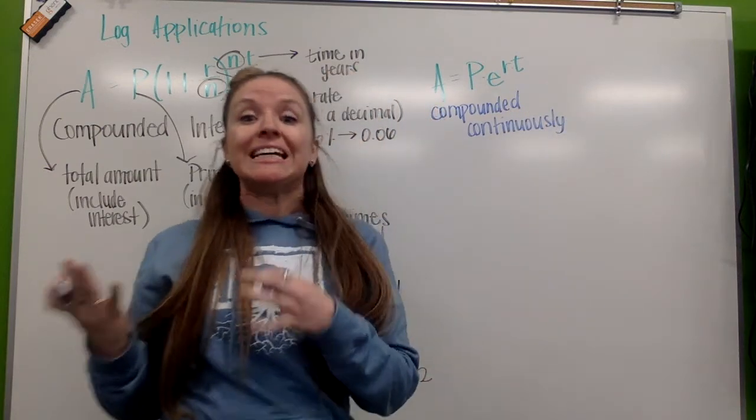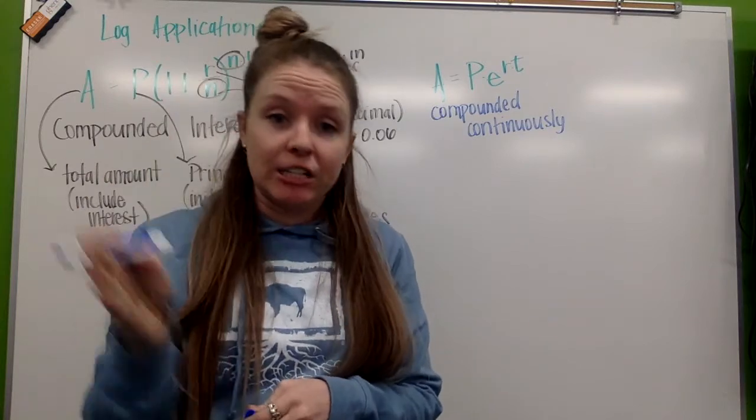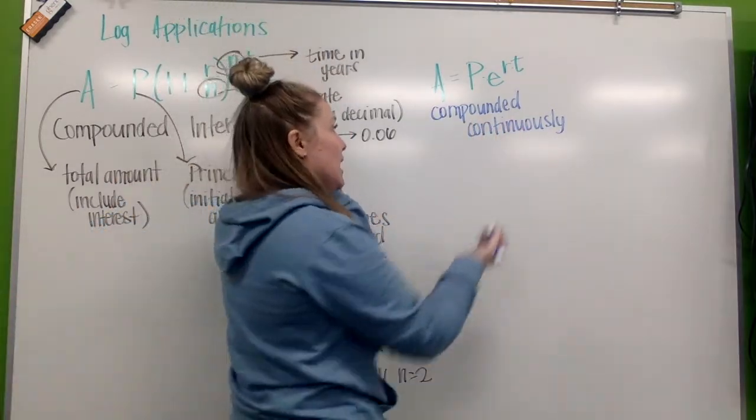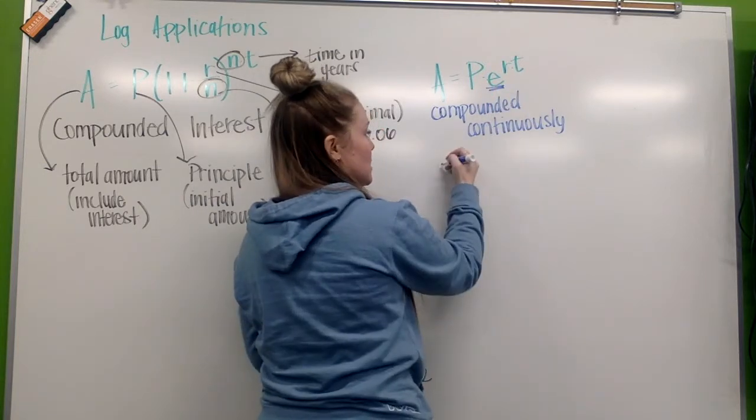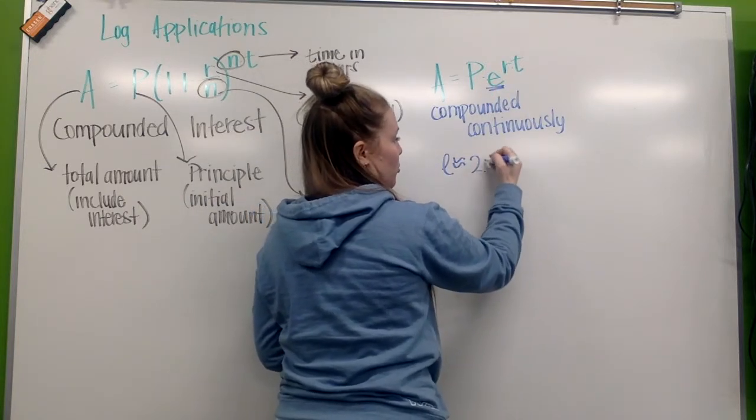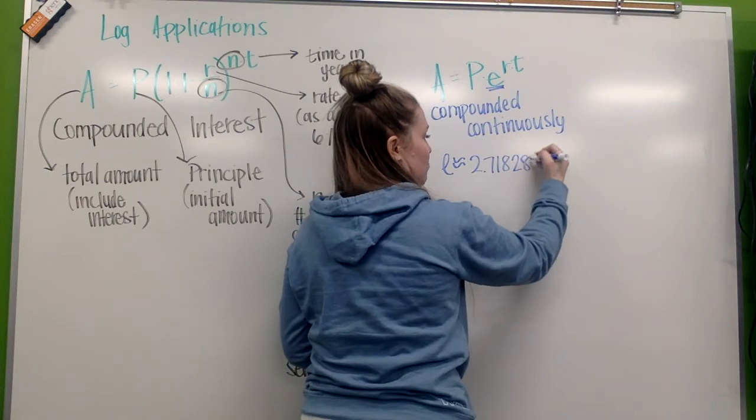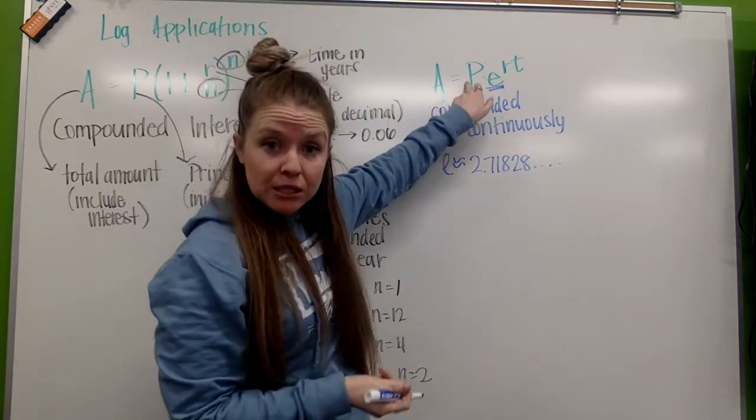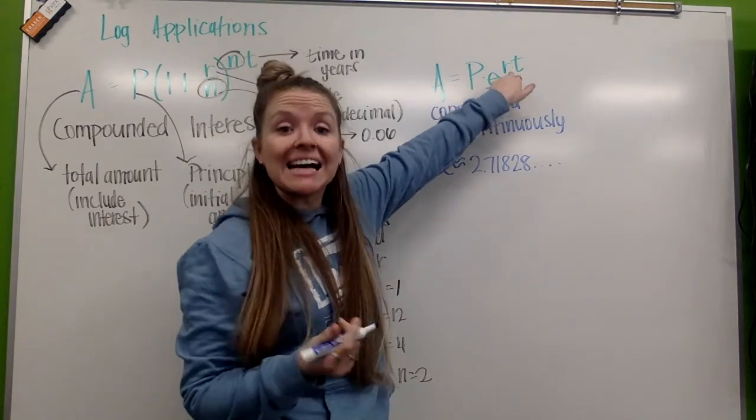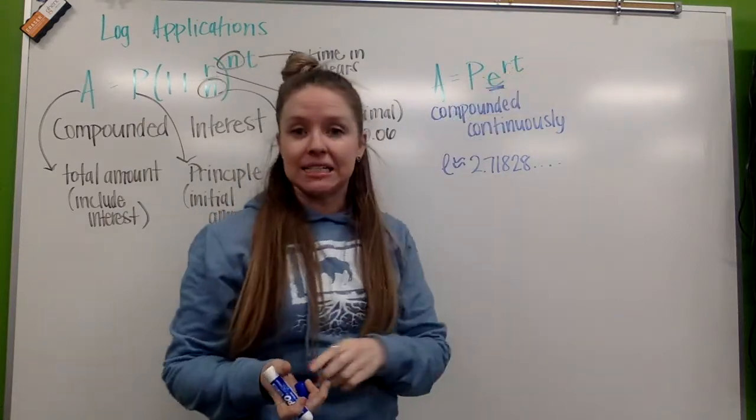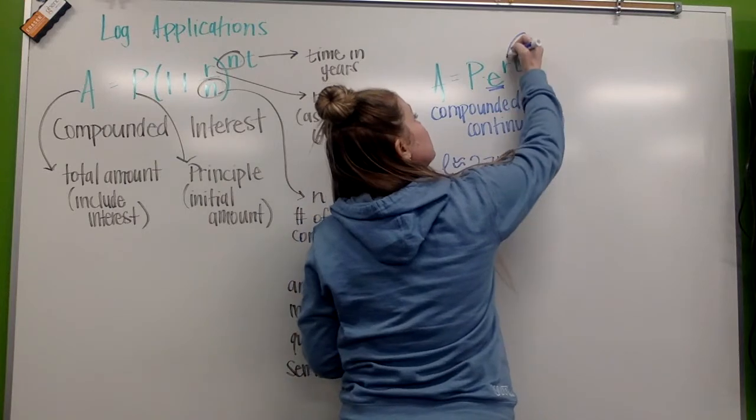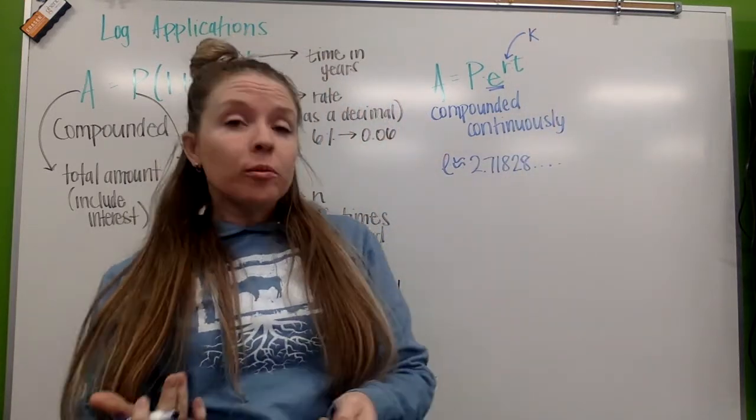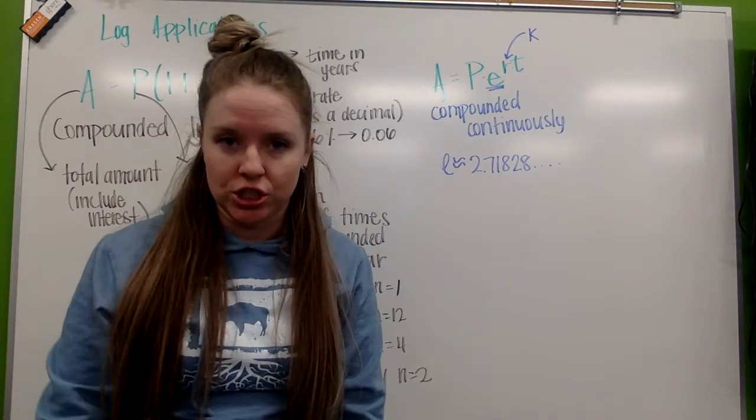So, if it's compounded continuously, it is happening every single second. So, it's just happening all the time. And E is the number 2.71828, and so on. You're not going to change that. It's always going to be there. Then we're going to have our principal. We're going to have our rate as a decimal. And T is time. Sometimes the R in this formula can be given as a K.